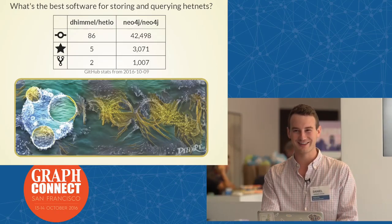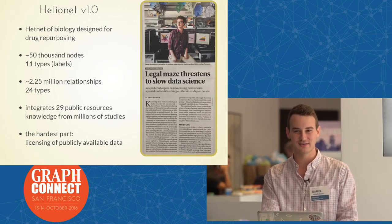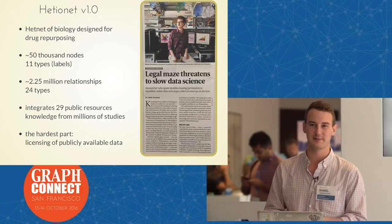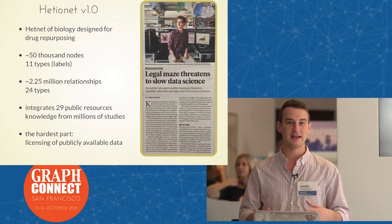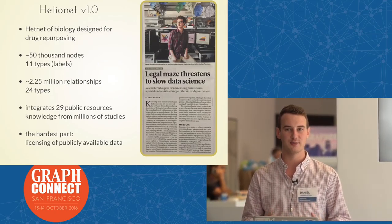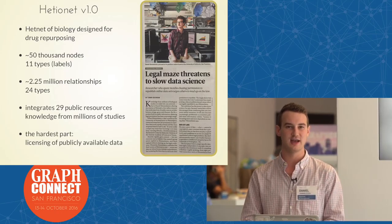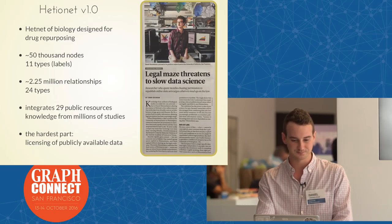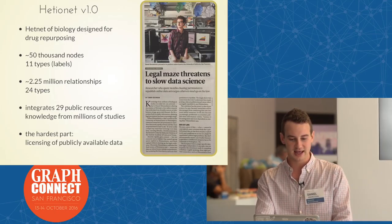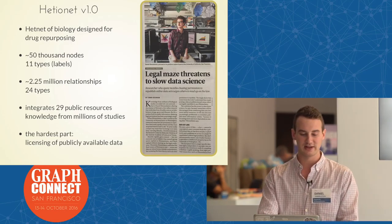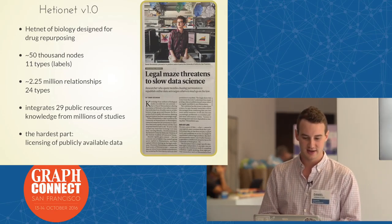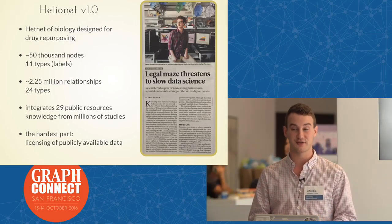The next step was putting biology into Neo4j. We did that last July by releasing Hetionet version 1.0, a HETNET of biology designed for drug repurposing — finding new uses for existing drugs. The motivation is that it's often much cheaper and safer to find a new use for drugs we already know how humans respond to than to design a new compound from scratch. In this network there are 50,000 nodes of 11 types, 2.25 million relationships of 24 types, integrating knowledge from 29 public resources and millions of studies.